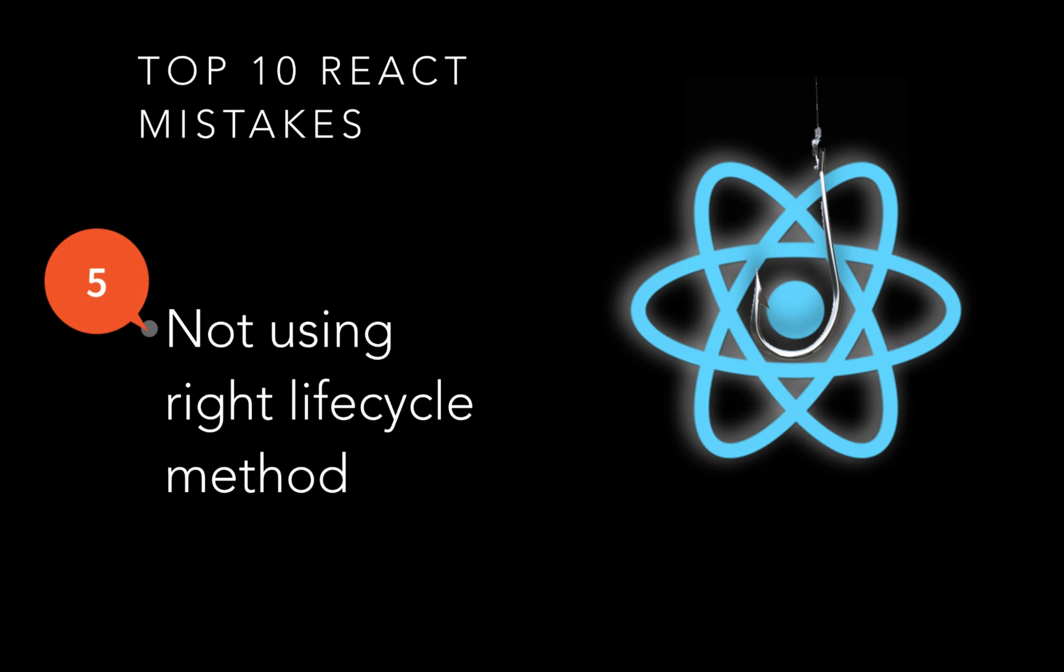The next mistake is quite powerful: not using the right lifecycle method. I've seen that more than enough. Let's say you want to get data from the server or make an API call. There are places where you can make it. There's a lifecycle method called componentDidMount - you can use that for API calls because this is when you know the page is loaded. But I've seen people doing it randomly in any lifecycle hook. Sometimes it may work because of timing, but it may not work perfectly. When it creates a problem, it's hard to debug.